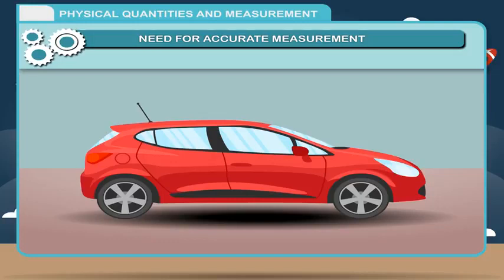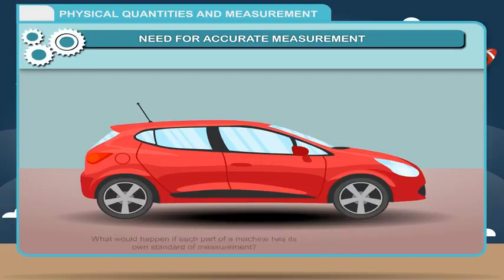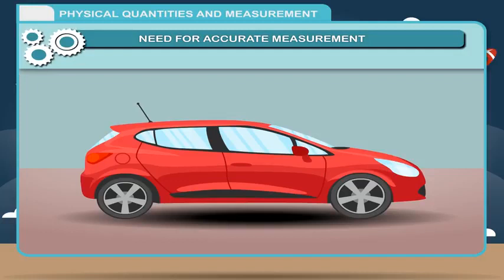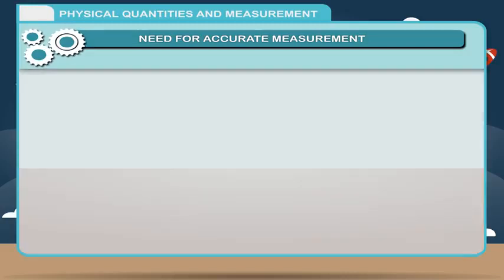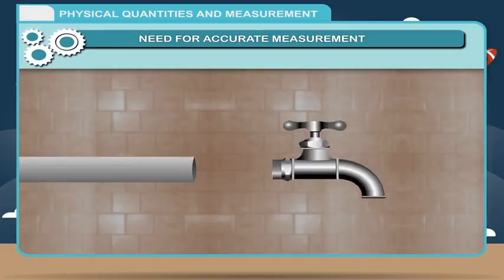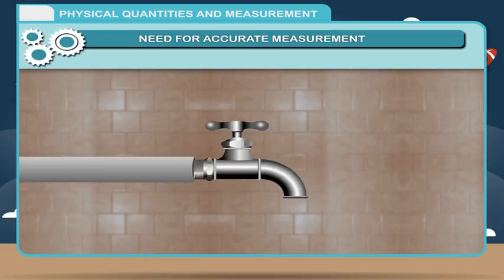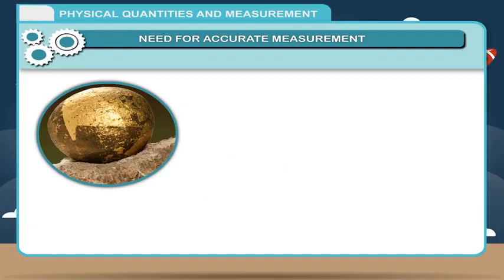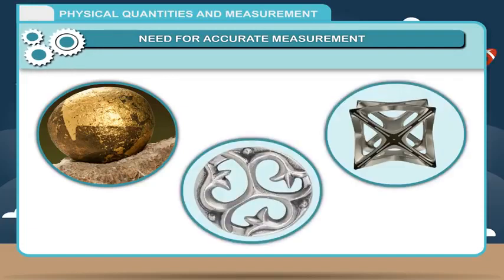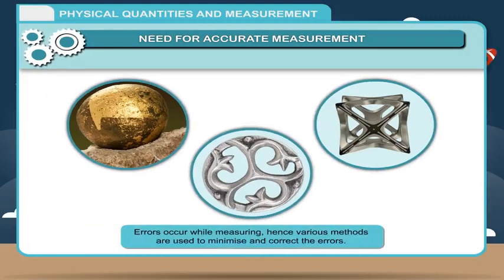Need for Accurate Measurement: What would happen if each part of a machine had its own standard of measurement? Components of a machine are manufactured at different places. If each component differs in measurement, there will be difficulty in assembling the machine. To remove such difficulties, measurements are controlled very accurately. The water tap you bring from the market fits into any pipe of its measurement — this could not have been possible without control on the accuracy of measurements. Expensive metals like gold, silver, and platinum are weighed extremely accurately. Often, errors occur while measuring, and various methods are used to minimize and correct them.